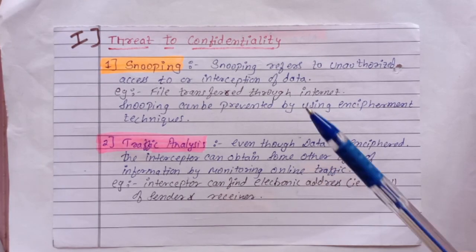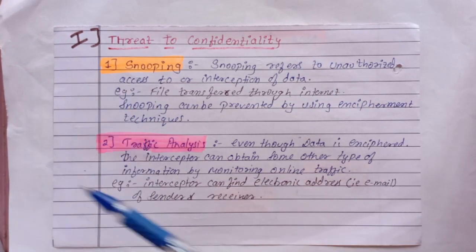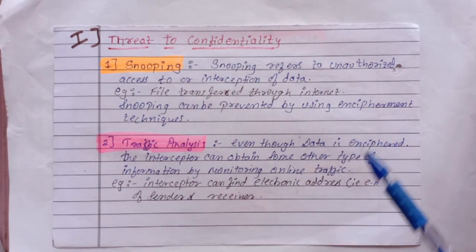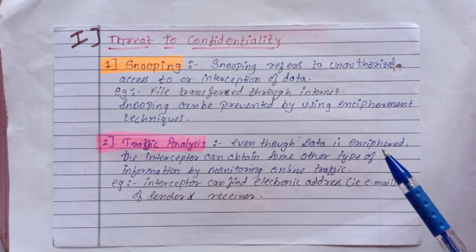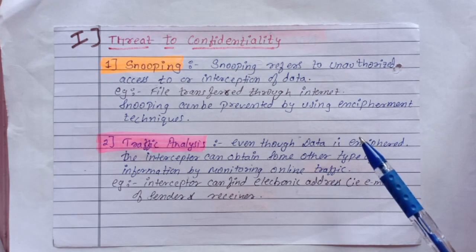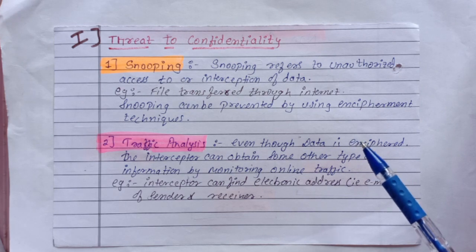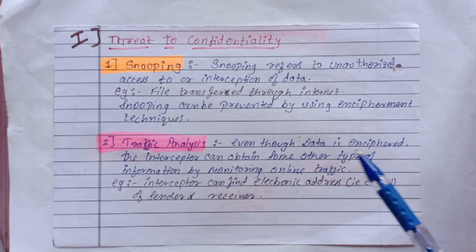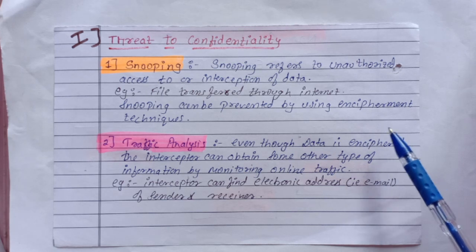In threats to confidentiality, the first attack is snooping. Snooping refers to unauthorized access to or interception of data — for example, a file is transferred over the internet and an unauthorized entity intercepts the data and uses it for their own benefit. Snooping can be prevented by using encipherment techniques.